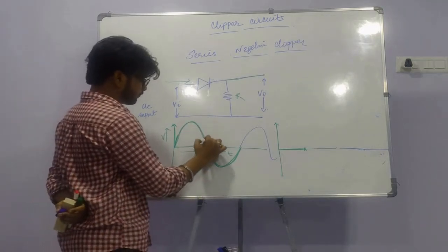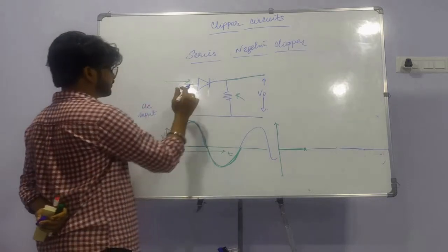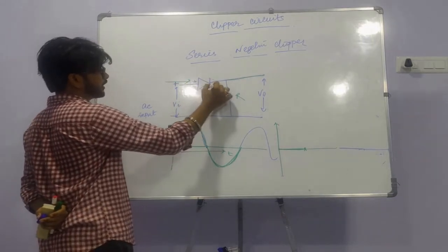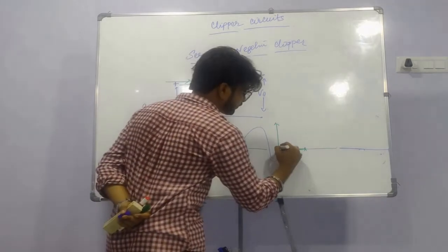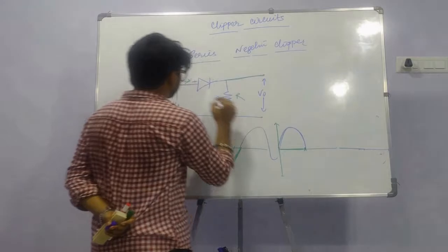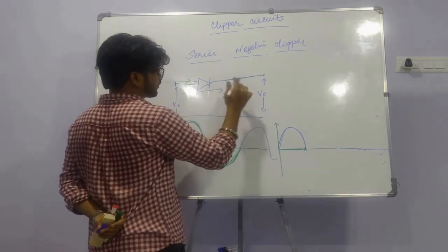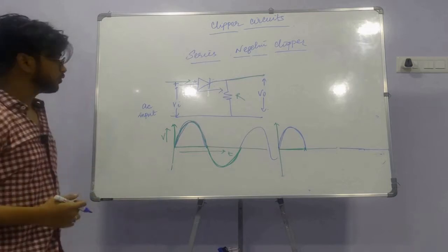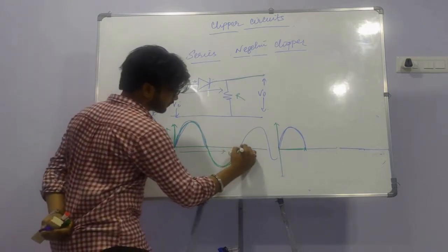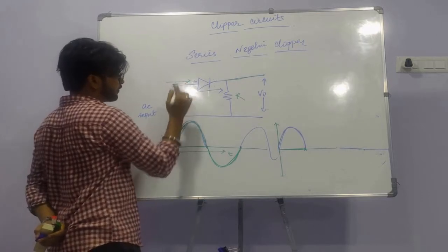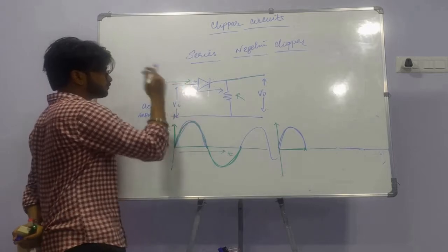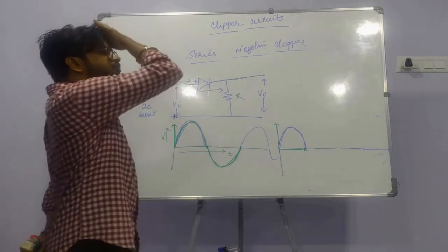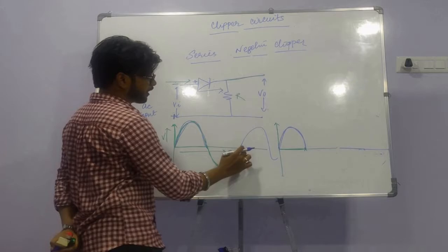In the first half cycle, when the positive AC signal is given, the positive terminal of Vi is connected to the positive of the P-N junction, therefore it is in forward bias condition and the positive half passes as it is. In the negative half cycle, Vi becomes negative-positive, so the negative of the voltage is connected to the positive of the P-N junction, constituting reverse bias condition, and the negative part is clipped away.